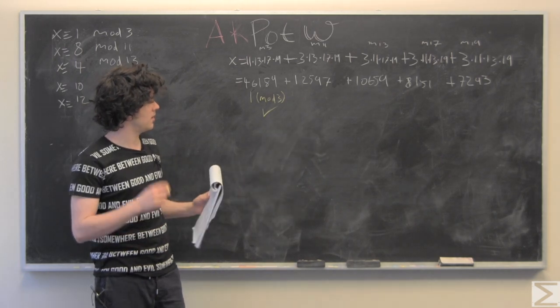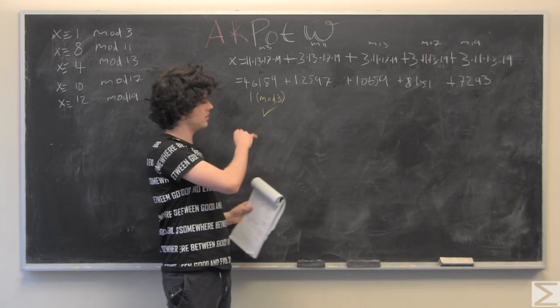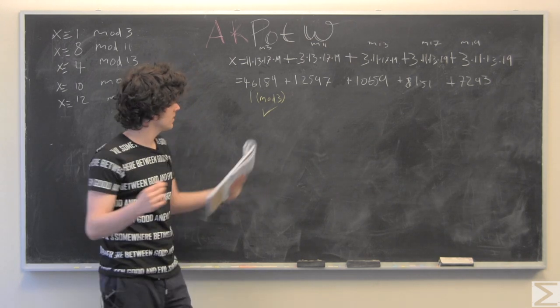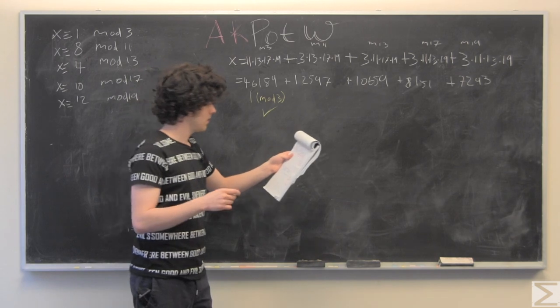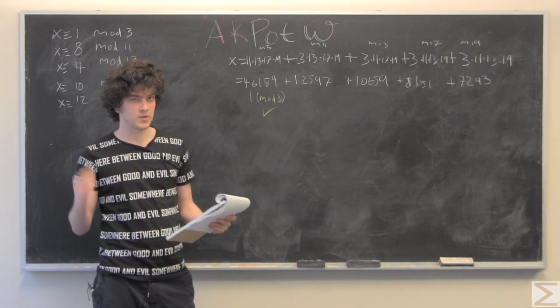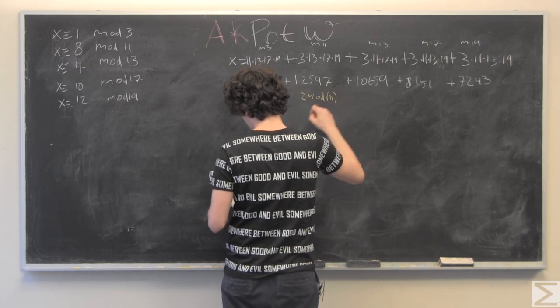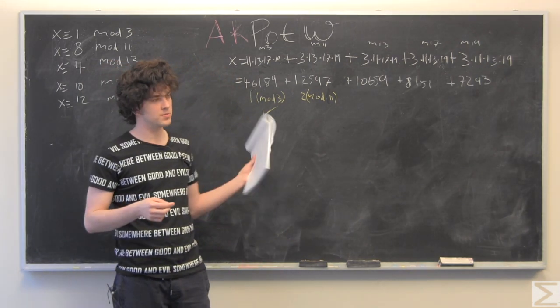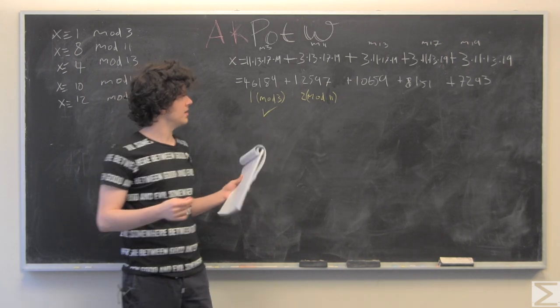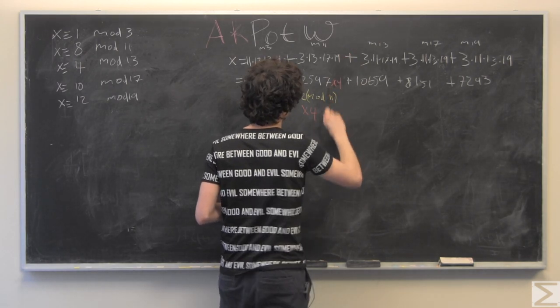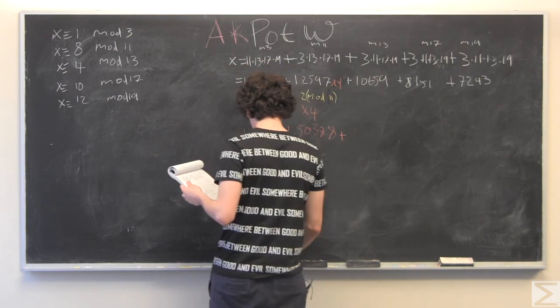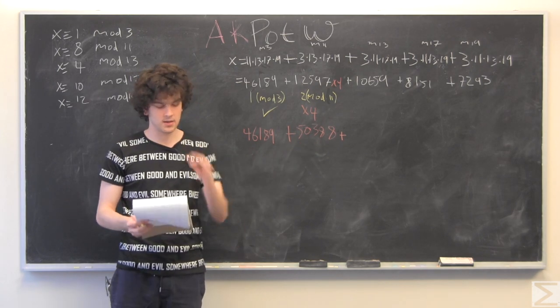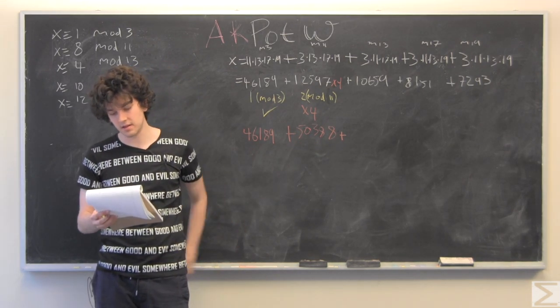Moving on, once we divide X by 11, so we're looking at X modulo 11. So, these terms are going to become 0 mod 11. And we're going to just look at what this one equals to, which when we divide it by 11 will give us a remainder of 2. Which, we want 8 modulo 11, so if we just multiply this by 4, we will get 8. Multiplying this number by 4 will give us 50,388. And you can check at home that that is indeed equal to 8 mod 11.